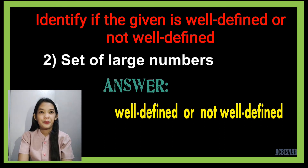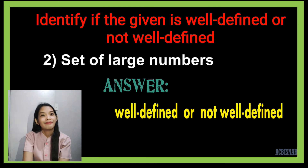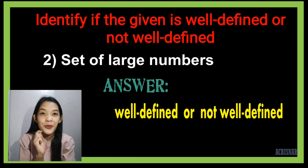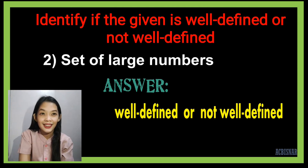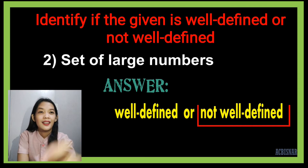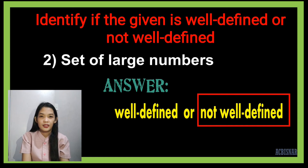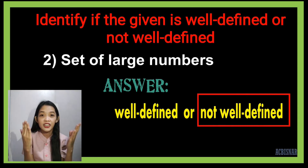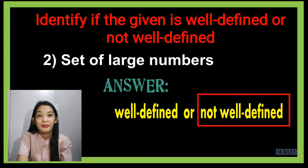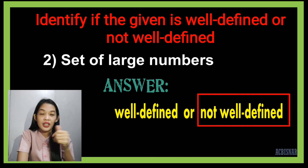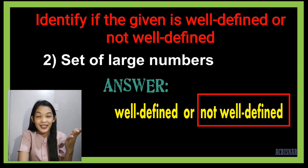Number two: set of large numbers. The answer is not well-defined, because we cannot fully identify the exact large numbers. Some numbers could be large depending on what we are talking about — for example, with money, a million is a large number.